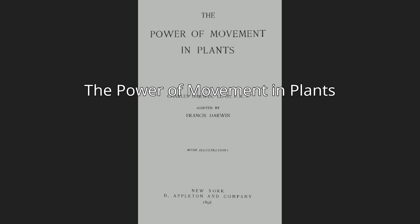This book stands at the culmination of a long line of study in plants and is immediately preceded by The Different Forms of Flowers on Plants of the Same Species (1877). These studies on plants were first evidenced in On the Various Contrivances by Which British and Foreign Orchids Are Fertilized by Insects (1862), a publication that immediately followed On the Origin of Species by Means of Natural Selection.